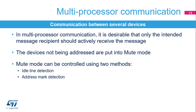To simplify communication between multiple processors, the USART supports a multiprocessor mode. In multiprocessor communication, it is desirable that only the intended message recipient should actively receive the message. The devices not being addressed are put into mute mode. The USART can enter or exit from mute mode using one of two methods: idle line detection or address mark detection.